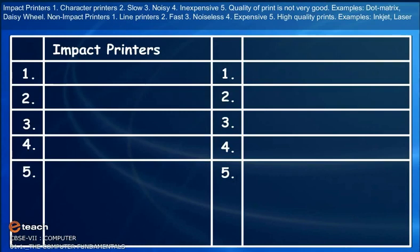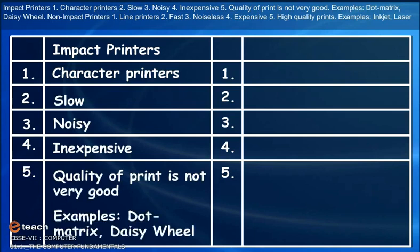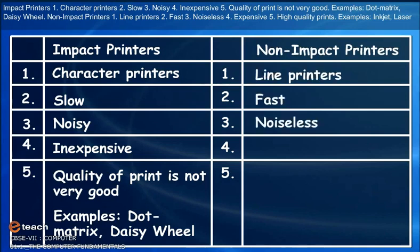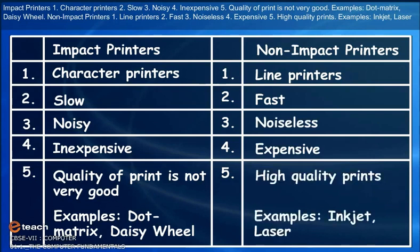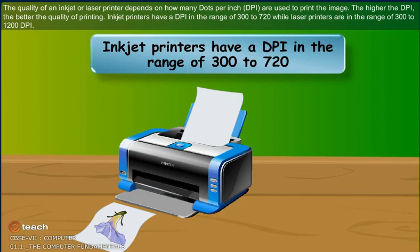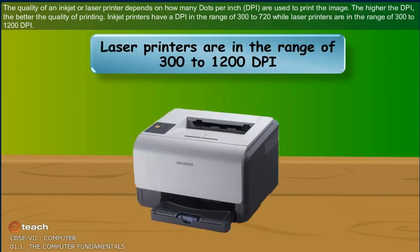To summarize: impact printers are character printers — slow, noisy, inexpensive, with poor print quality; examples are dot matrix and daisy wheel. Non-impact printers are line printers — fast, noiseless, expensive, with high quality prints; examples are inkjet and laser. The quality of an inkjet or laser printer depends on how many dots per inch (DPI) are used to print the image. The higher the DPI, the better the quality. Inkjet printers have a DPI in the range of 300 to 720, while laser printers range from 300 to 1200 DPI.